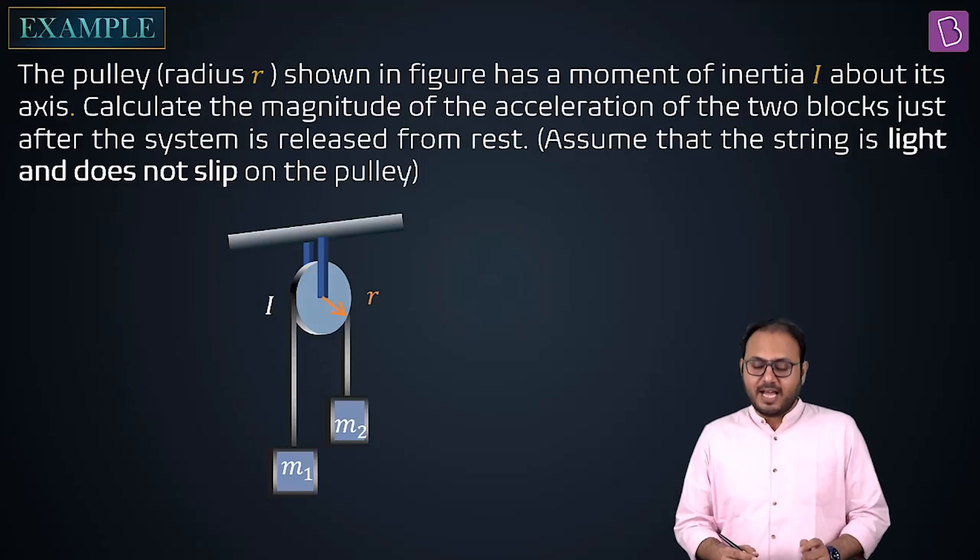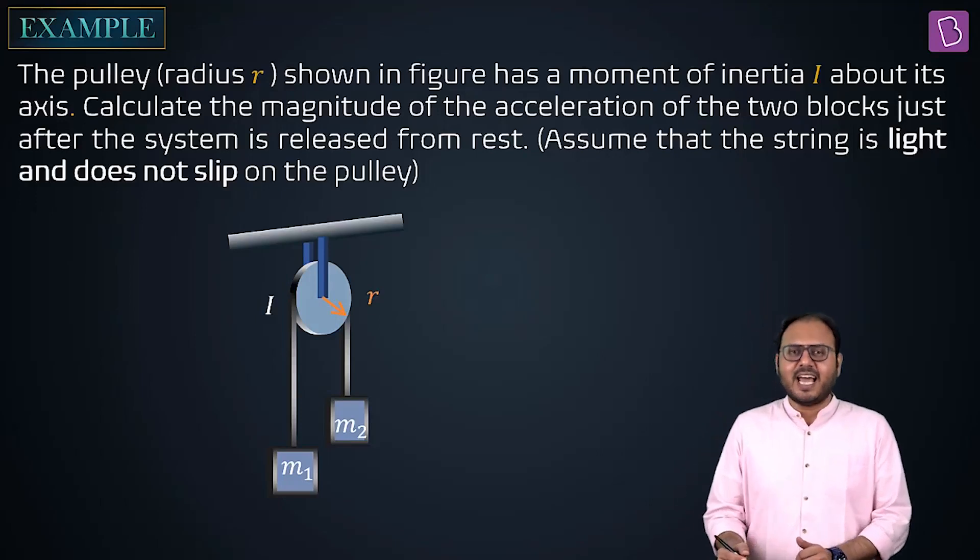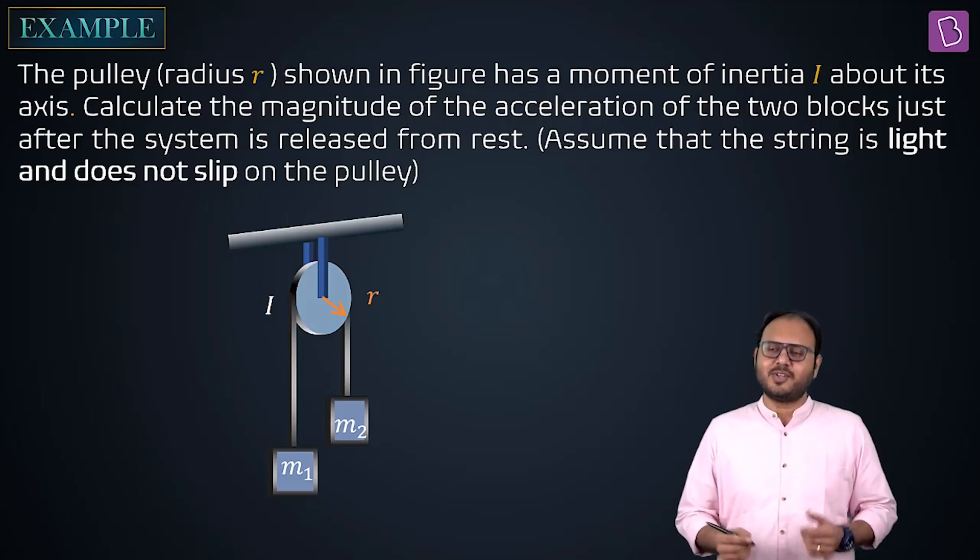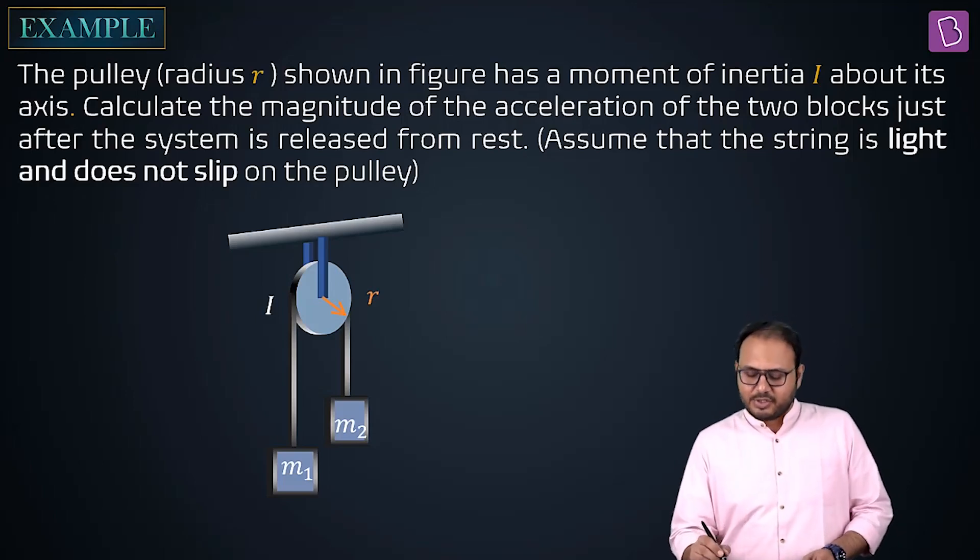The pulley shown in the figure has a moment of inertia I about its axis. Calculate the magnitude of the acceleration of the two blocks just after the system is released from rest. This is your typical Atwood machine and assume that the string is light and does not slip on the pulley.